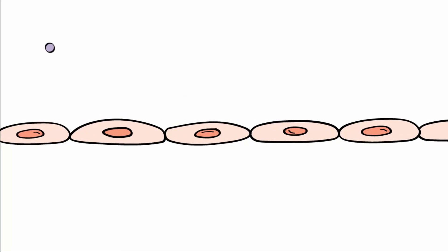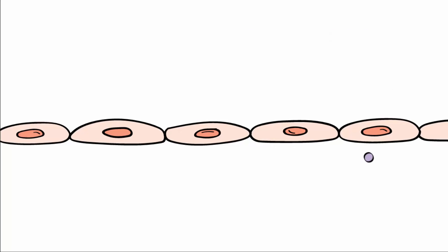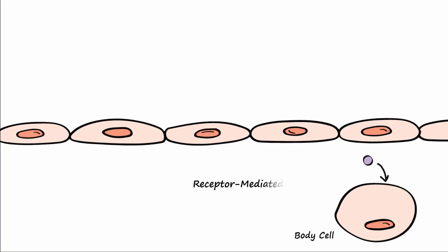Normally, most of the low-density lipoproteins, or LDLs, pass through the endothelial cells by transcytosis from the blood and then enter body cells by receptor-mediated endocytosis to be used in normal cell processes.